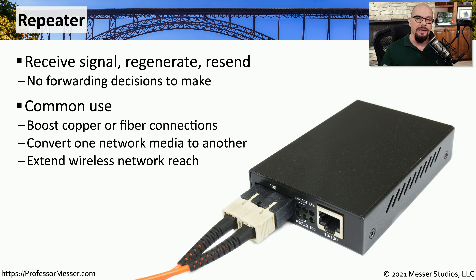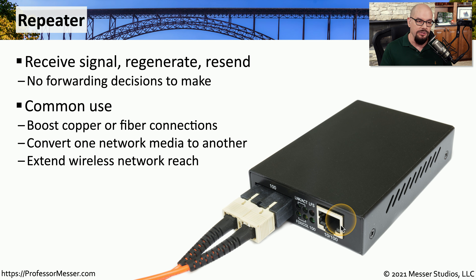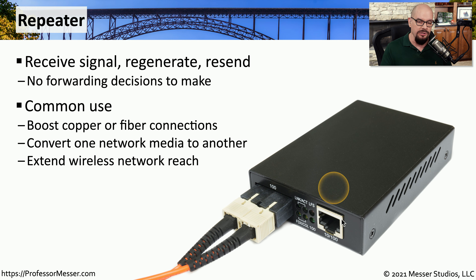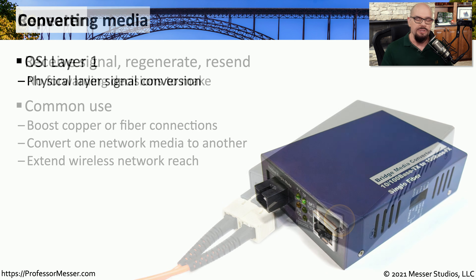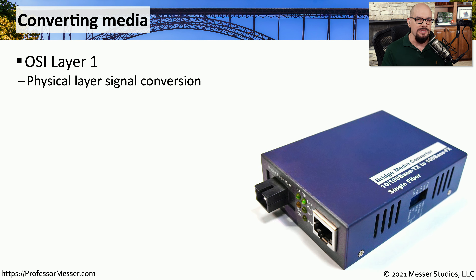Repeaters are commonly used to boost the signal over a copper or fiber connection, but they might also be used to connect one type of media to another. For example, this particular repeater is connecting a 100 megabit fiber connection to a 100 megabit copper connection. This conversion process is occurring at the physical layer, or OSI Layer 1.